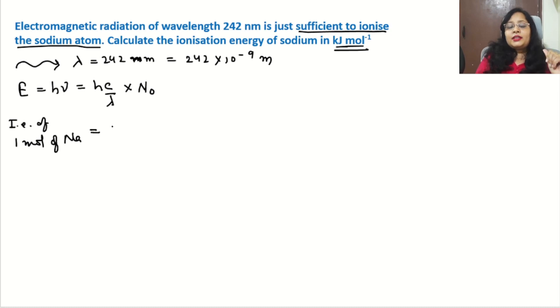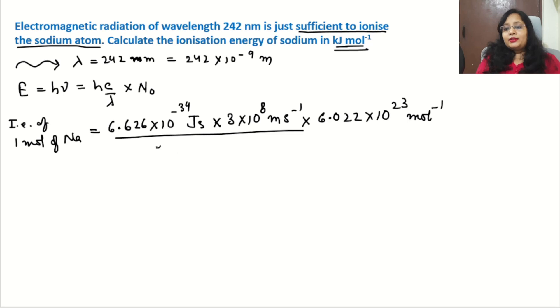So h c by lambda into N₀. Here h is Planck's constant, its value is 6.626 into 10 to the power minus 34 joule second, multiplied by c, speed of light, 3 into 10 to the power 8 meter per second, and N₀, Avogadro number, its value is 6.022 into 10 to the power 23 per mole. Now this whole divided by lambda, that is 242 into 10 to the power minus 9 meter.